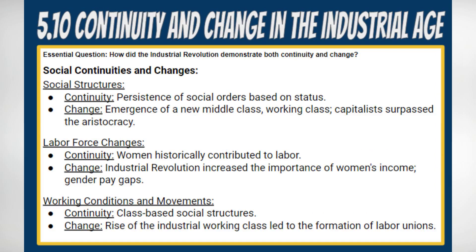Social Continuities and Changes. 1. Social Structures. Continuity: social orders based on economic or ethnic status persisted. Change: the Industrial Revolution led to the emergence of a new middle class and a working class, and a transformation in the social hierarchy with industrial capitalists surpassing the aristocracy in wealth and prestige.